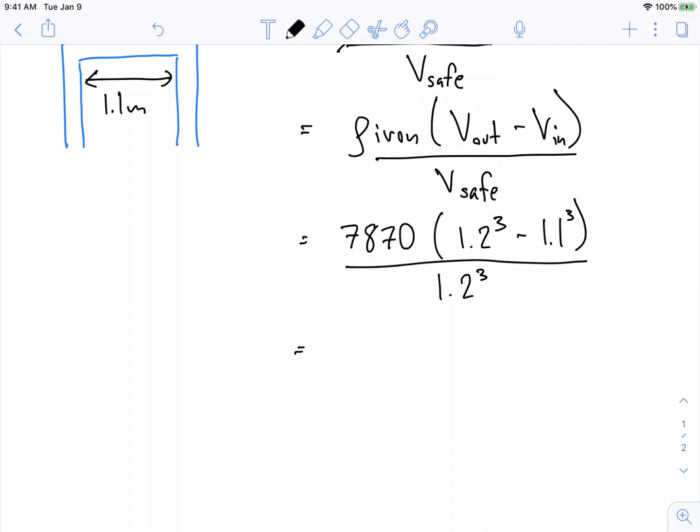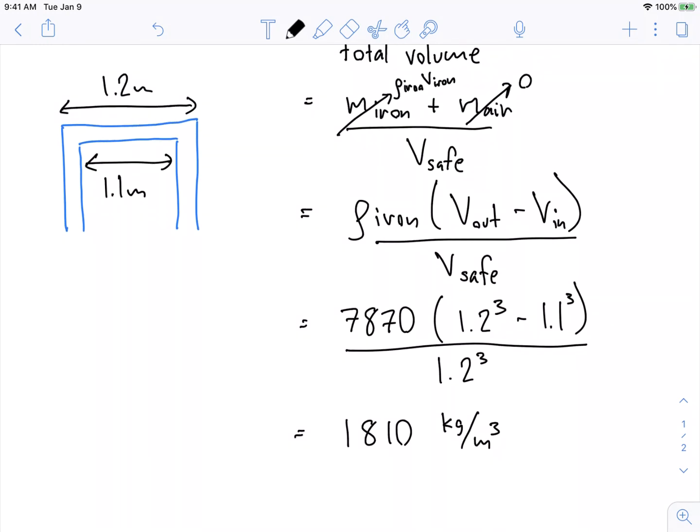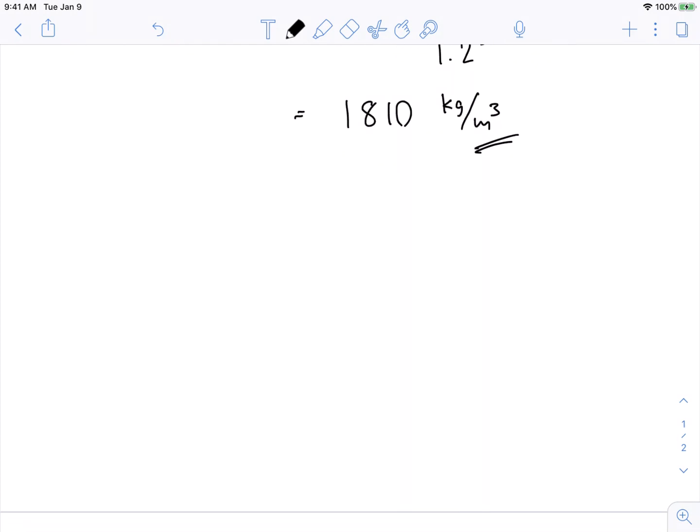What you'll notice is that nicely the meters cubed from the top and the meters cubed from the bottom cancel each other out, so we don't ever have to think about them. But the number I actually get when I do this is 1810 kilograms per meters cubed. Okay, so that's the average density of the safe, right? And you'll notice it's much less than the density of iron.